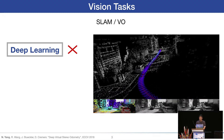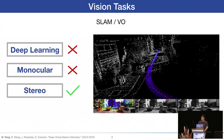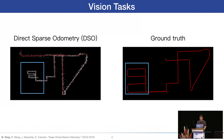Visual odometry means to reconstruct the world from moving cameras and estimate the camera poses at the same time. In the large-scale outdoor scene, classical methods can only achieve good performance with stereo cameras. Using a single camera, monocular methods cannot perform well on large-scale sequences because the metric scale cannot be recovered, resulting in very large scale drift in the end. Direct Sparse Odometry is the state-of-the-art monocular visual odometry system, but it still has a very large scale drift.